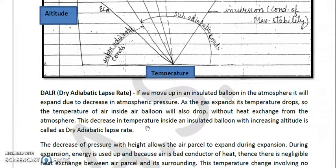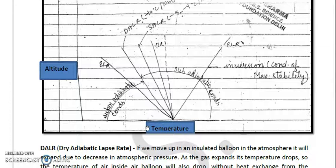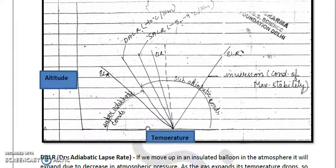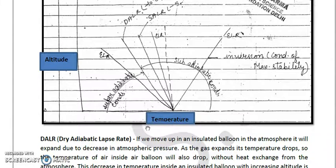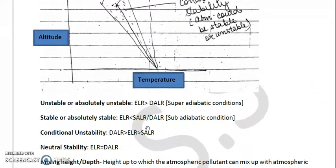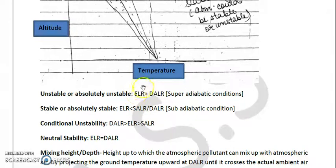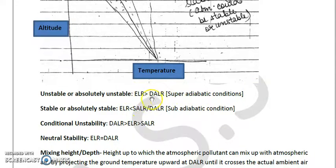How does one decide whether the atmosphere is stable, unstable, or neutral? There are some simple logics for this. When the environmental lapse rate is more than the dry adiabatic lapse rate, the environment is unstable. This is also called a super-adiabatic condition, because the ELR exceeds the DALR — anything more than the dry adiabatic lapse rate is called super-adiabatic.